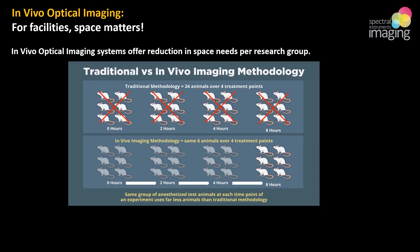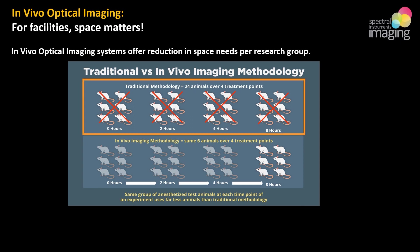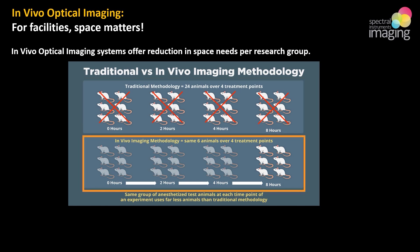Let's quickly compare traditional versus in vivo methodology in terms of data collection. For histology and microscopy, several animals are sacrificed at various time or treatment points. In this example, the method uses four groups of six mice over eight hours for 24 mice total. By contrast, optical imaging uses one group of six over the complete eight-hour time course, resulting in a smaller N or cohort number and better paired data.